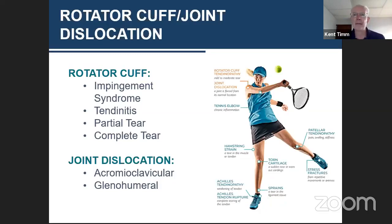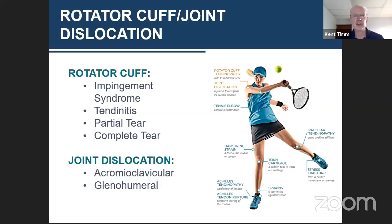An impingement syndrome is something that should be correctable in most cases, but it does require some degree of intervention. These things do not typically relieve themselves without intervention — you can't just rest and take time away from the sport without successfully correcting the problem. If not corrected, impingement syndrome can develop into tendonitis in other parts of the rotator cuff. It usually starts in the supraspinatus, but that irritation can spread. Once you have tendonitis, intervention through medication, physical therapy, or corrected stroke mechanics is needed.